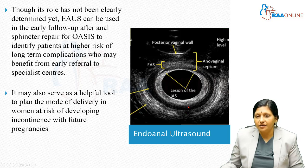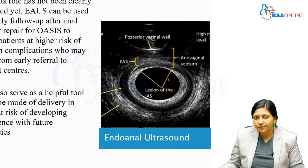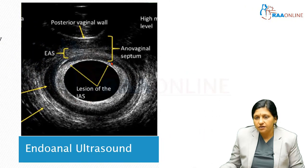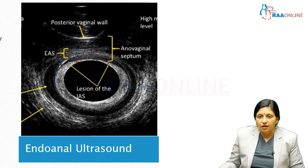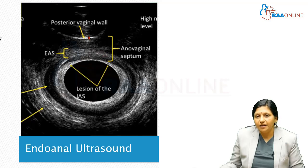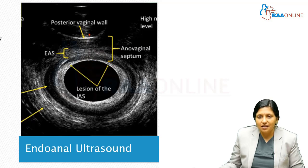Here we see an endoanal ultrasound image. We can see the inner anal sphincter and the external anal sphincter. The inner anal sphincter is shown to have a gap, indicating a damaged inner anal sphincter. The area between the posterior wall of the vagina and the anterior wall of the anus is called the inner vaginal septum, and this thickness is important. We also need to look at the external anal sphincter.